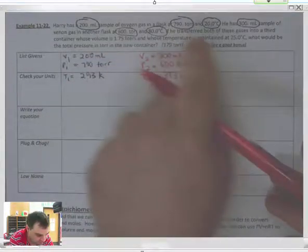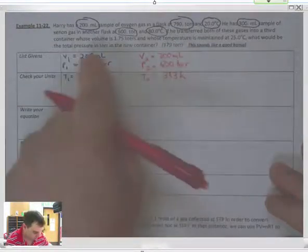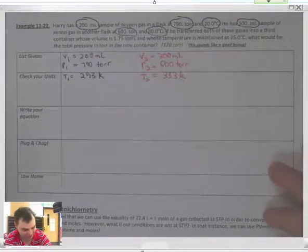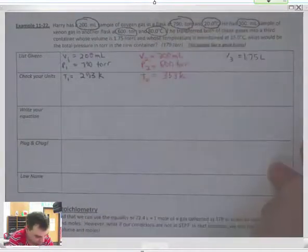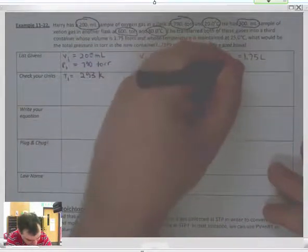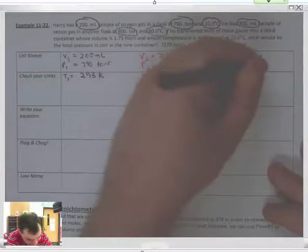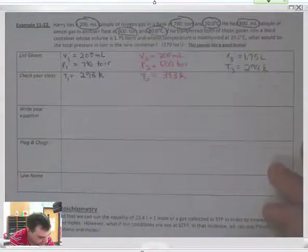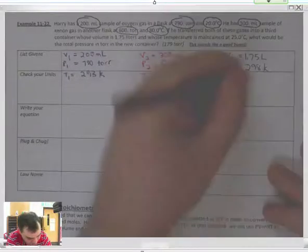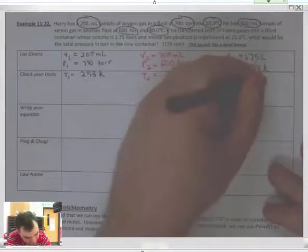If he transfers both gases into a third container, which the volume is 1.75 liters. We have a third container here. So there's a V3 of 1.75 liters. Temperature is going to be 298 Kelvin. What will be the total pressure in the new container in torr? So we're looking for P3 in torr.